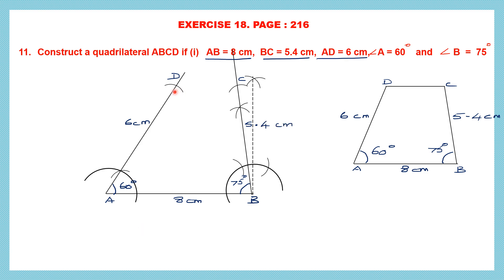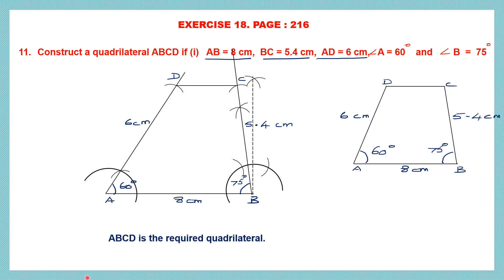Now we just have to join D and C. So we have the line CD, and now we have our quadrilateral ABCD. Let's verify: AB is 8 centimeters — yes. Angle A is 60 degrees — done. Angle B is 75 degrees — constructed. AD is 6 centimeters — done. BC is 5.4 centimeters — done. ABCD is the required quadrilateral.